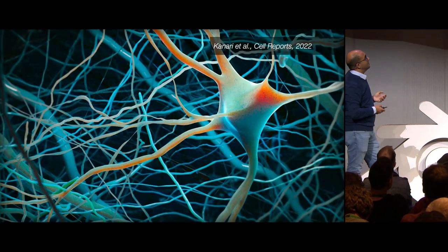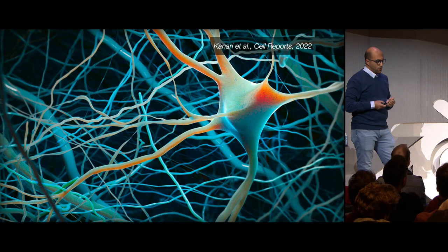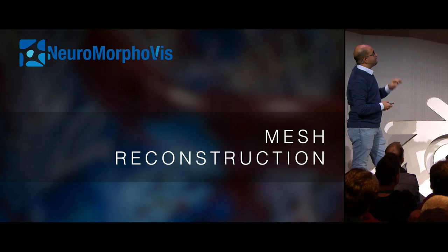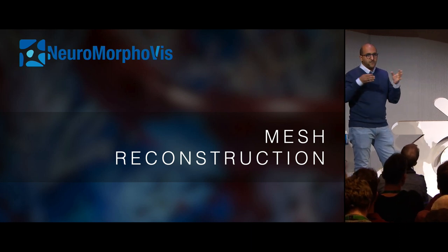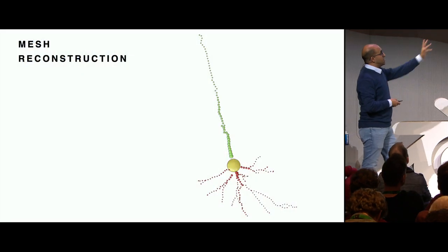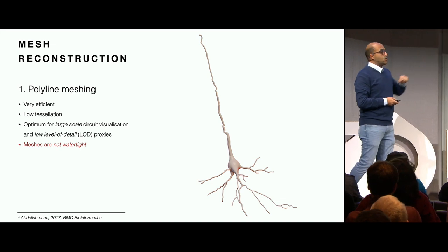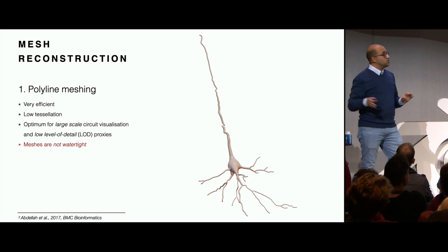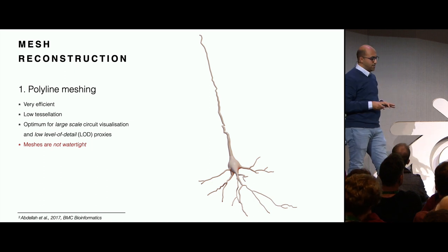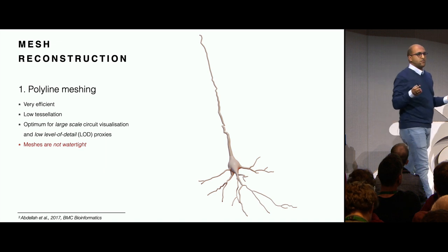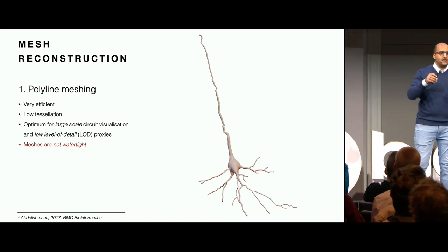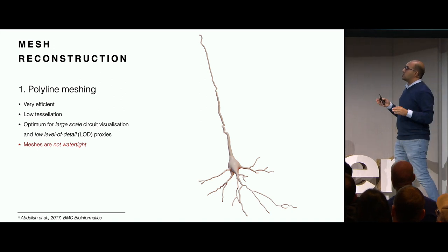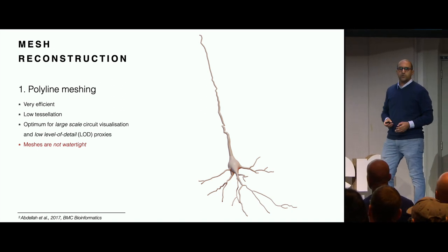We have morphologies, but we need meshes for several reasons: for visual analytics, for visualizing simulations, or for simulations themselves. This is what we get from the lab but this is what we need. To reconstruct the meshes we've used different mesh reconstruction techniques in Blender. The first method is polyline or spline meshing - we take all the arbors, convert the splines into meshes, and the soma is generated using metaballs. Very efficient, low tessellation, optimum for large-scale visualization.